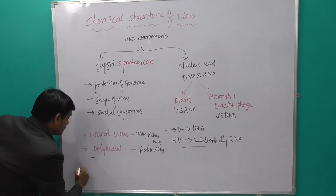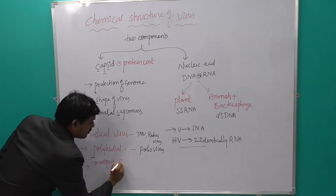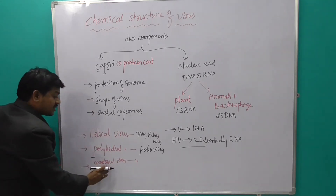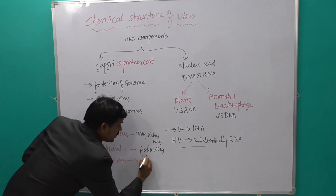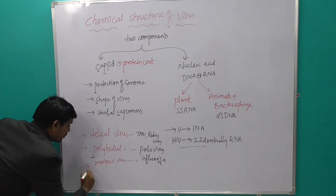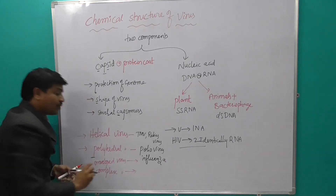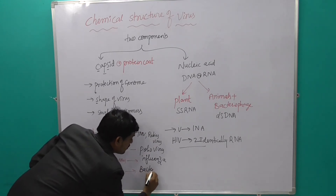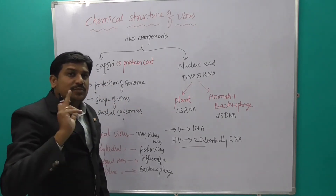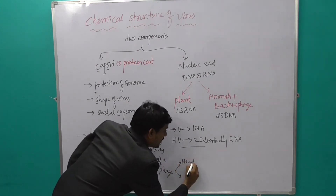The third type is envelope virus — the best example is influenza. The next, last one is complex virus — the best example is bacteriophage. We have already studied the bacteriophage structure: it has two parts — one is the head and another one is the tail.